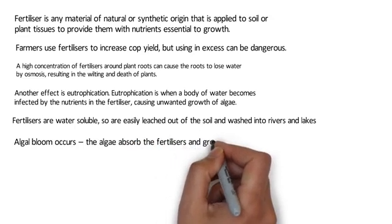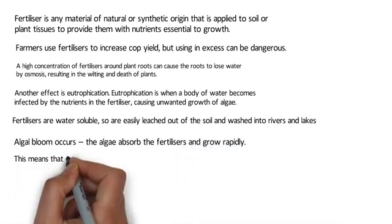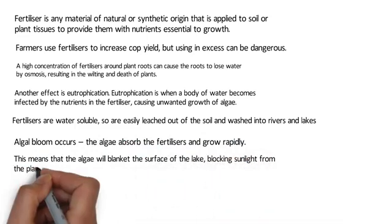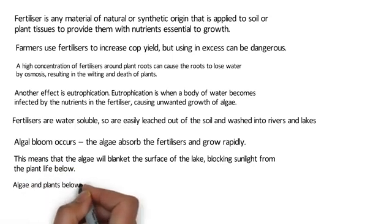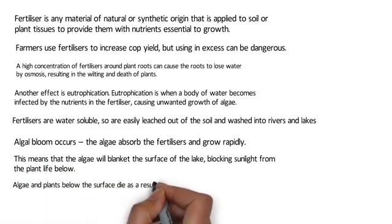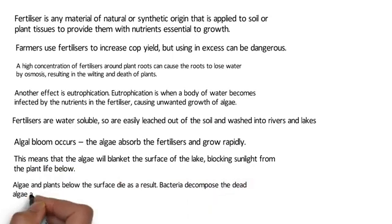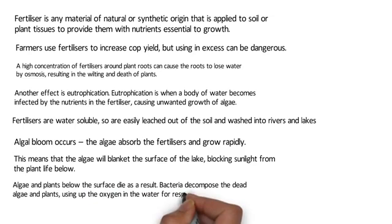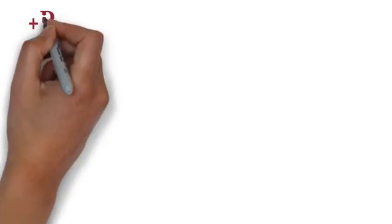Algal bloom occurs. The algae absorb the fertilisers and grow rapidly, blanketing the surface of the lake and blocking sunlight from the plant life below. Algae and plants below the surface die as a result. Bacteria then decompose the dead algae and plants, using up the oxygen in the water for respiration, causing the animals to die as well.